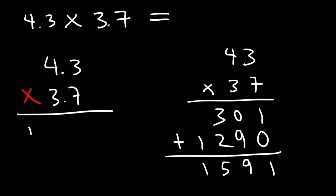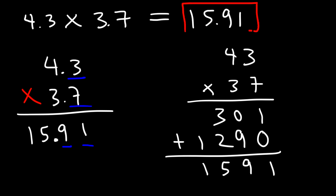Now, we're going to have the same numbers here. However, the place of the decimal point will be different. Notice that we have one digit to the right of the decimal point in each number. So in our answer, we should have two digits to the right of the decimal point, which means the decimal point should be here. Therefore, the answer is 15.91. That's how you multiply decimal numbers — follow the same procedure, but make sure you place the decimal point in the right spot.